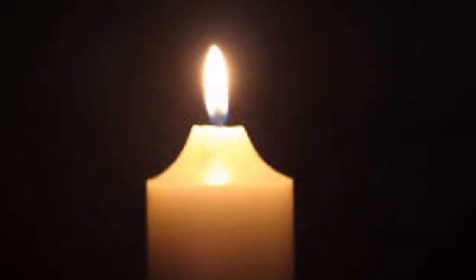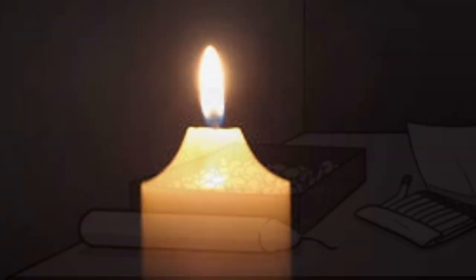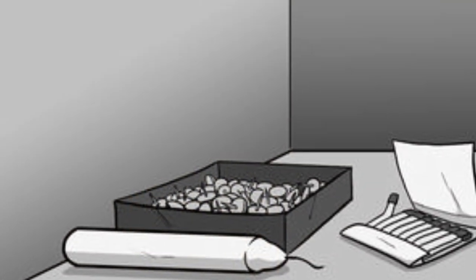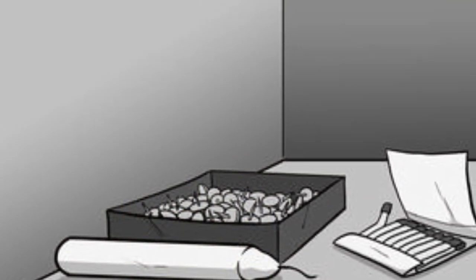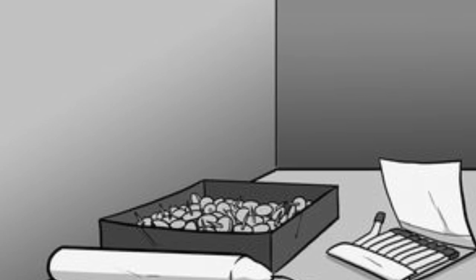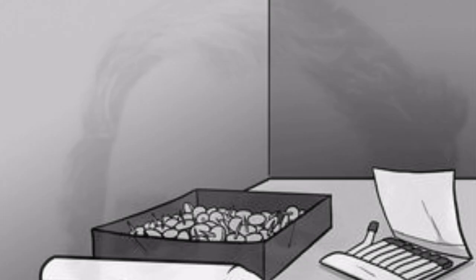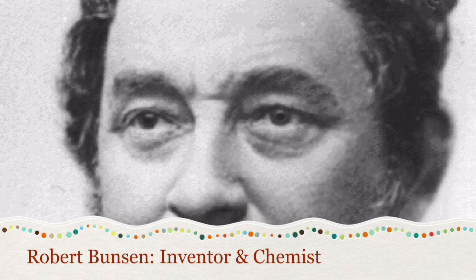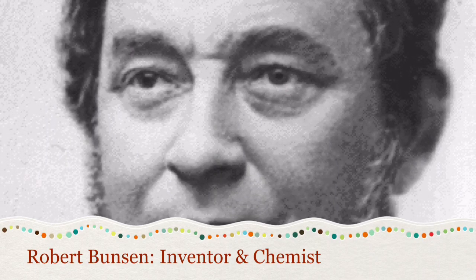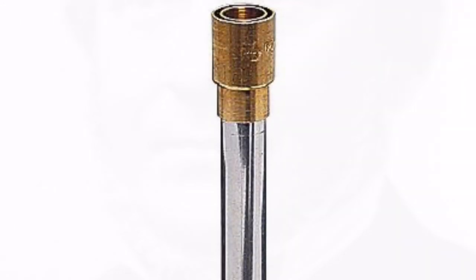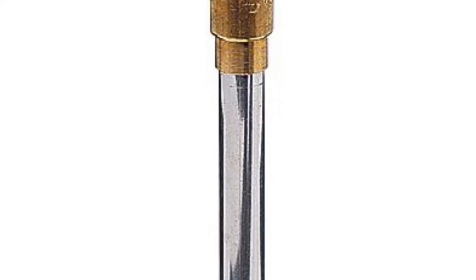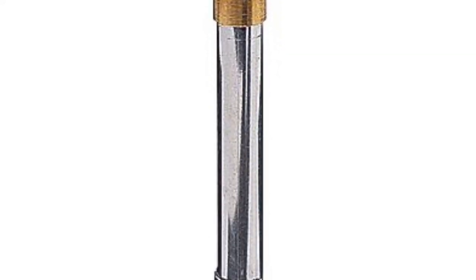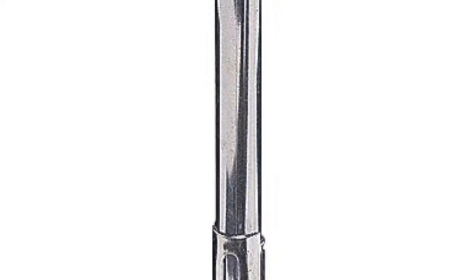Prior to 1855, when a scientist needed fire for an experiment they used a candle. Candles, however, were only mildly effective — they burned out quickly and were not reliable sources of heat. Enter Robert Bunsen, a chemist and inventor who solved this problem by creating a constant heat source to use in experiments: the Bunsen burner.